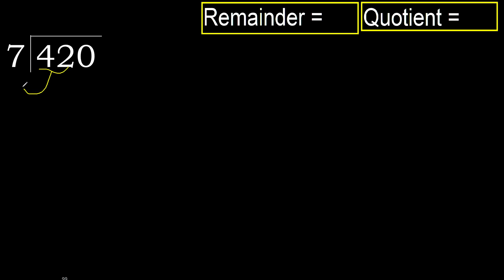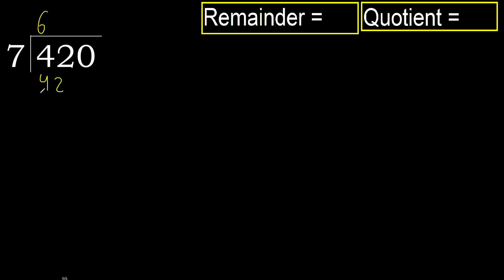42 is not less, therefore with 42. 7 multiplied by which number is nearest to 42 but not greater? 7 multiplied by 7 is 49, which is greater. Multiply by 6: 42. 42 is not greater.